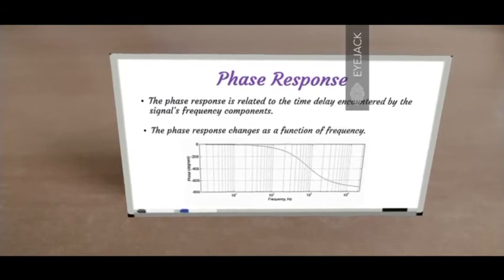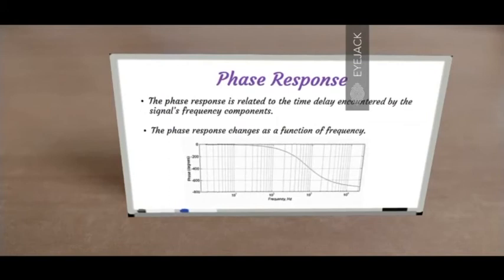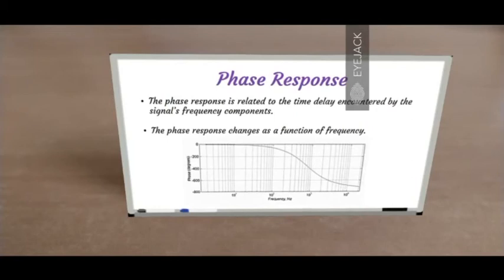The phase response is related to the time delay encountered by the signal's frequency components, and it changes as a function of frequency. As you can observe from the plot, the y-axis represents the phase in degrees and the x-axis represents the frequency in Hertz. The graph starts from the top left corner and ends up in the bottom right corner — as the frequencies increase, the phase keeps changing, as you can see in the curve.